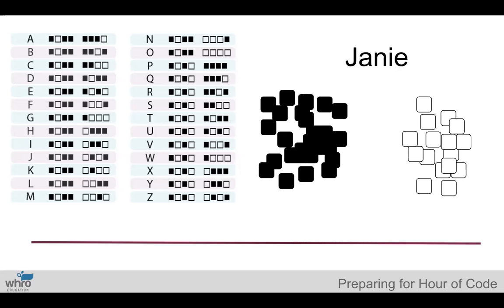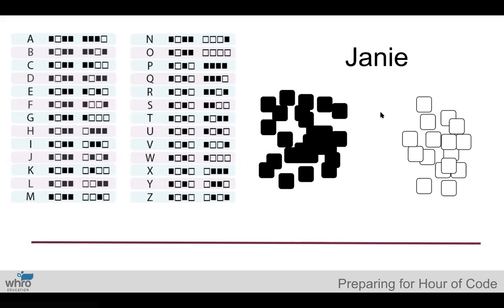Here's the basis of the binary bracelet activity. You'll want this key either printed out on sheets of paper so your students can use them, or projected onto a board or screen. You're also going to need to give each student a string that will fit around their wrist, and a whole bunch of black and white beads — I use black and white pony beads from Michaels or Amazon. Students are going to be binary coding the letters in their name. My first name is Janie, so I start with the letter J, whose code goes black, white, black, black, white, black, white, black.